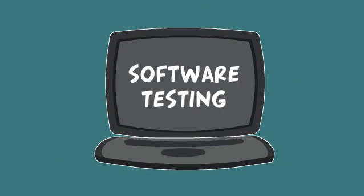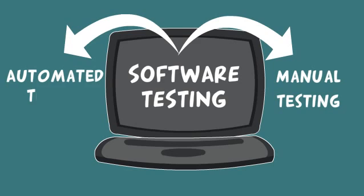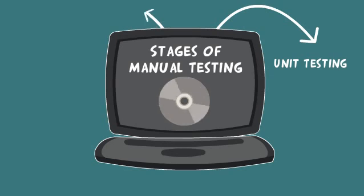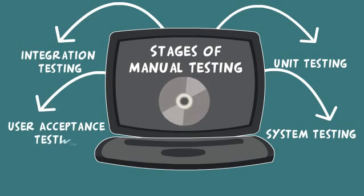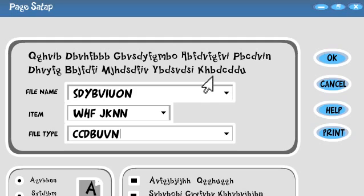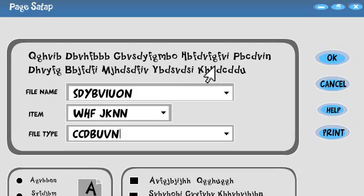Software testing is mainly of two types: manual and automation testing. There are different stages for manual testing like unit testing, integration testing, system testing, and user acceptance testing. In manual testing, the tester takes over the role of an end user and tests the software to identify any unexpected behaviors or bugs.